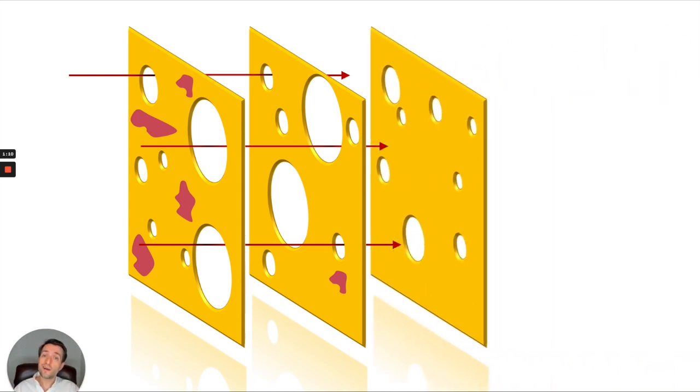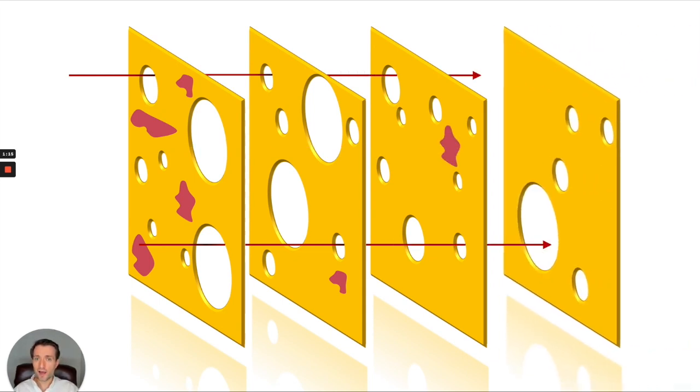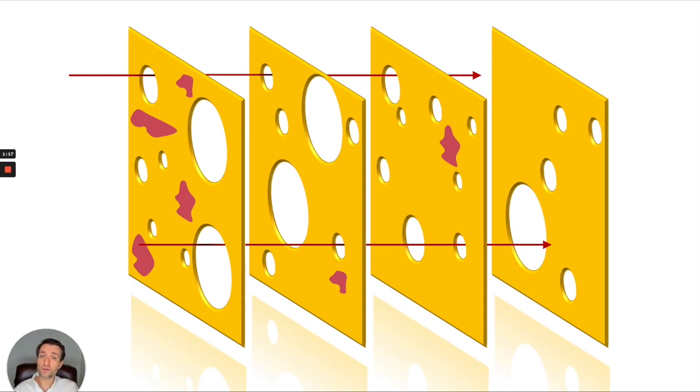So the more layers you add, the more of the aggressor you're going to stop. And at the end, if you have enough layers of cheese, enough slices, all the aggressor is going to be covered because there's enough cheese throughout the entire layers to stop everything.